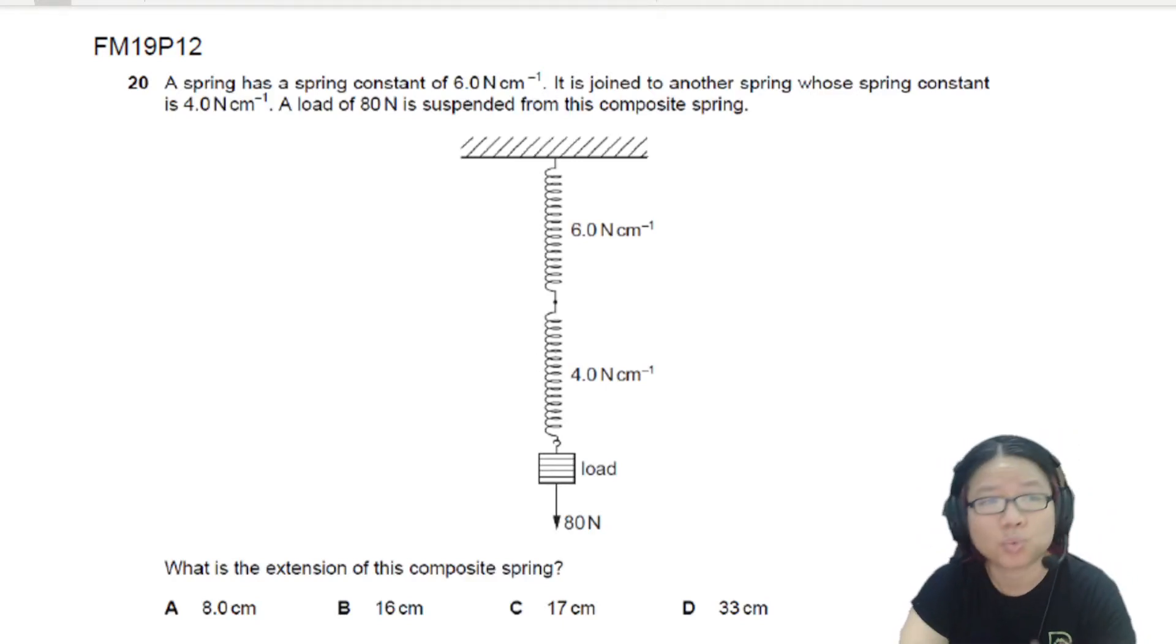In this example, we have two springs. They are not identical. They have different spring constants. One is 6 N per cm, one is 4 N per cm.